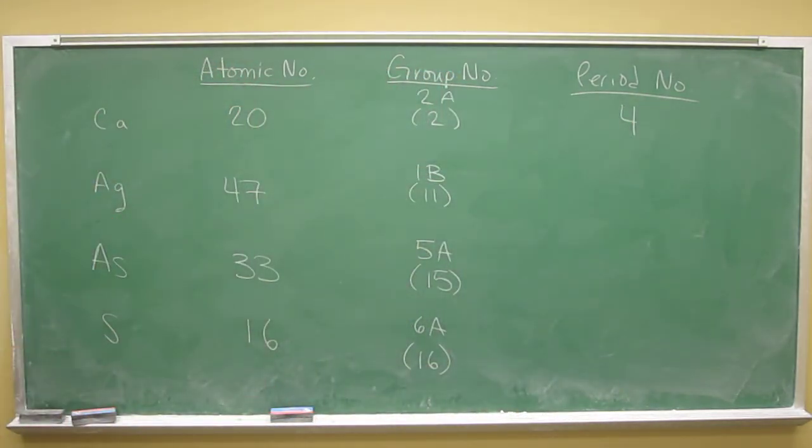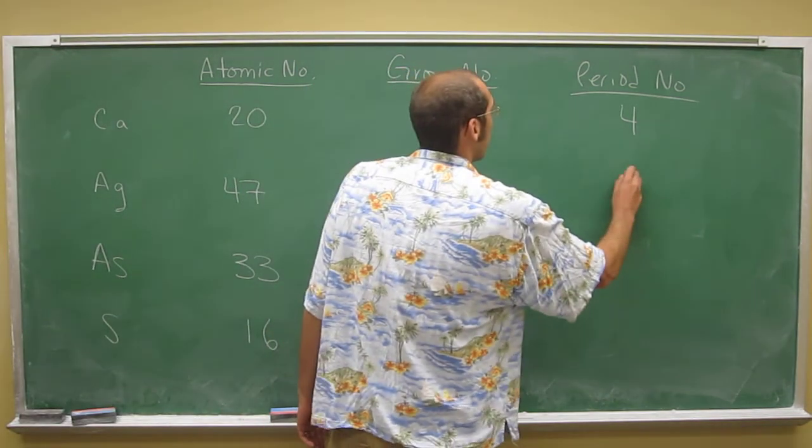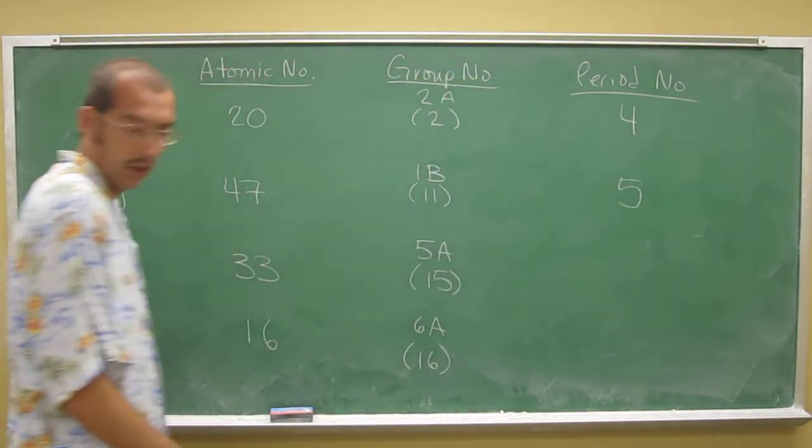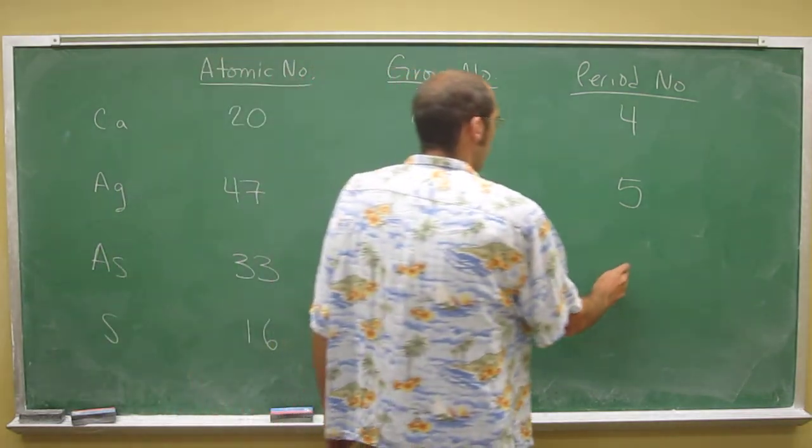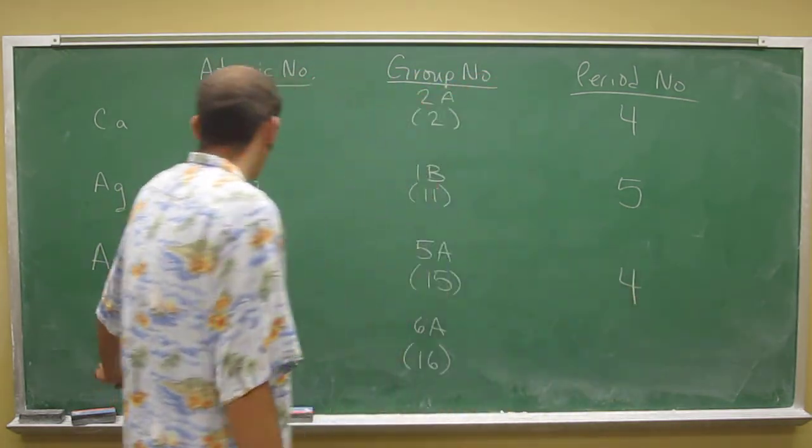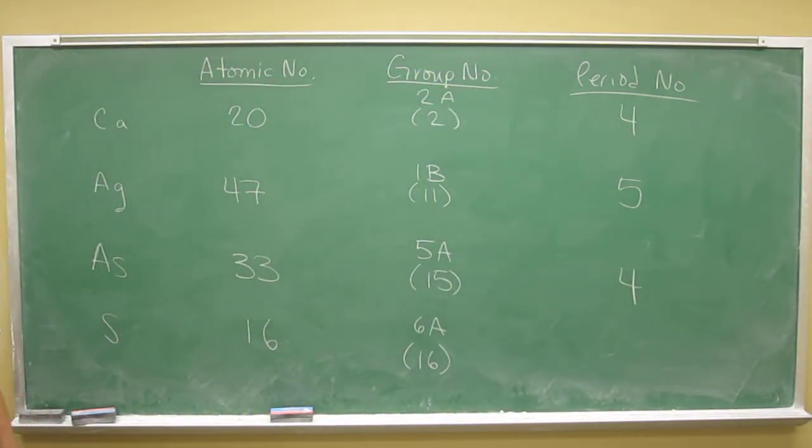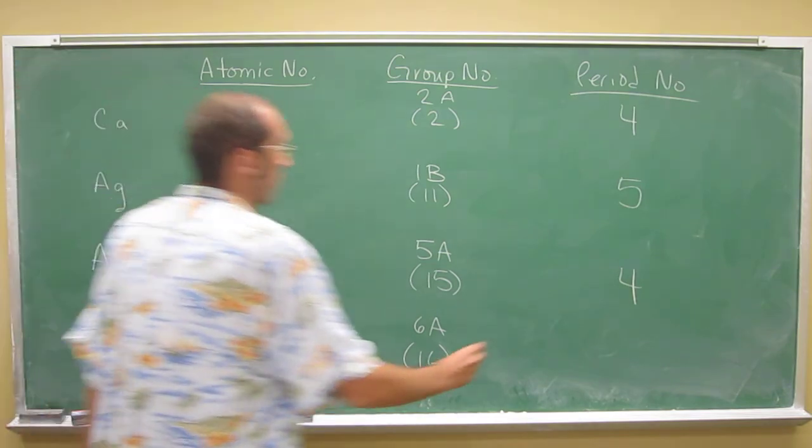1, 2, 3, 4, 5. Silver is in period 5. Arsenic, also period 4. And sulfur is one period above arsenic in period 3.